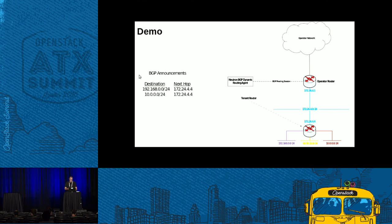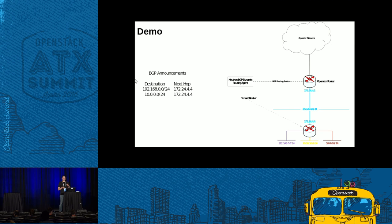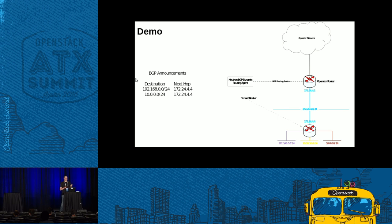Before the demo, let me explain the environment I've created so you know what you're looking at. I've set up a Neutron router with three tenant networks connected to it and an external network, connected to a Quagga router in my environment. I have a Neutron dynamic routing agent which I'm going to make peer with that Quagga router, and you'll see the tenant networks get announced and show up inside Quagga.